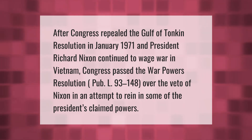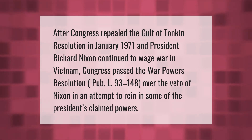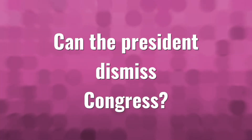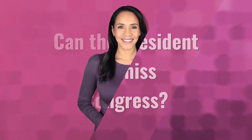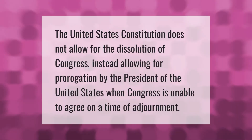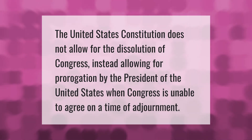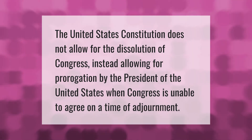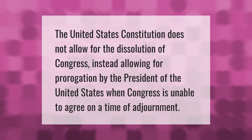The United States Constitution does not allow for the dissolution of Congress, instead allowing for prorogation by the President of the United States when Congress is unable to agree on a time of adjournment.